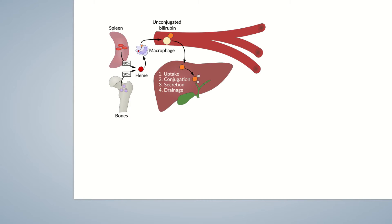The third step, which involves bilirubin secretion into the bile canaliculi, is an active transport mechanism, limiting the rate of bilirubin excretion. This is important in cases of impaired hepatocyte function, where hepatocyte excretion of conjugated bilirubin is usually more severely impaired than conjugation itself.